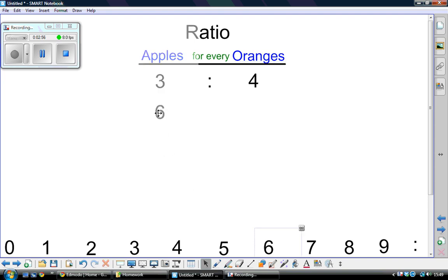But if you had six apples, you would have... Of course, it's twice as many apples, so it will also be twice as many oranges. Six apples for every eight oranges.